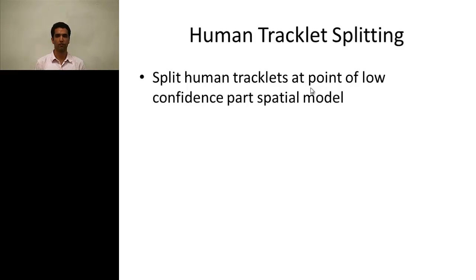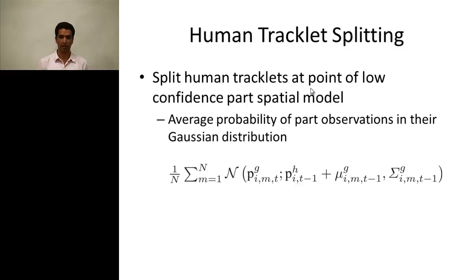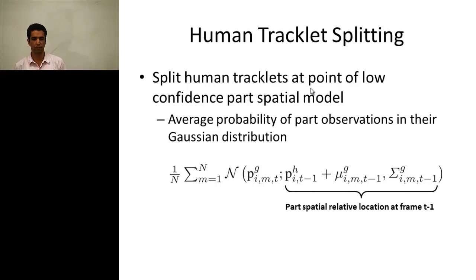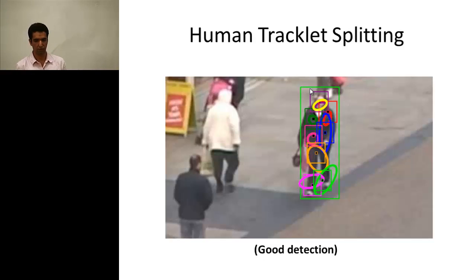We split human tracklets at the point of low confidence part spatial model. We find the probability of detection of all parts relative to their corresponding Gaussian distribution and take the average of these probabilities. If it is less than some threshold, we split the tracklet. For a good detection, the center of each part detection falls within its distribution — for example, the head detection is within the head distribution.